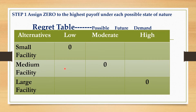To complete step one of the minimax regret criterion, we assign zero to the highest payoff under each possible state of nature. Under 'Low,' the highest is 10 million — assign zero to small size facility. Under 'Moderate,' the highest is 12 million — assign zero to medium size facility. For 'High,' the highest is 16 million and that corresponds to large size facility, so assign zero there.